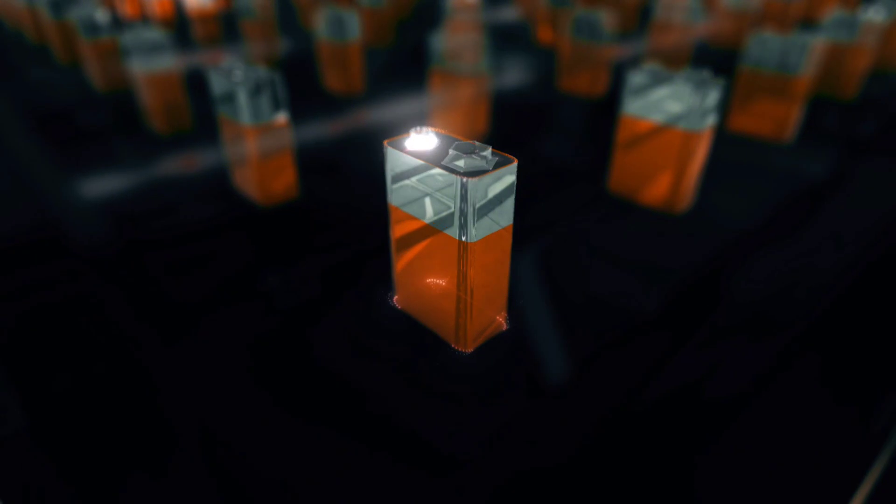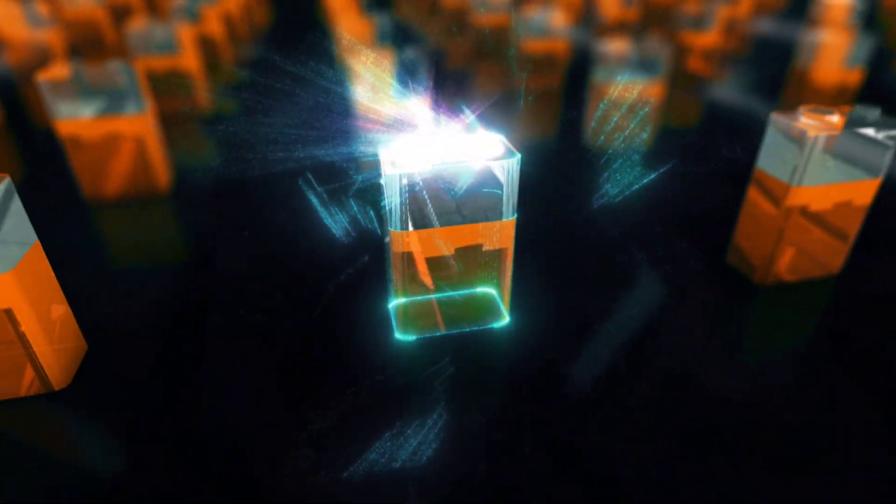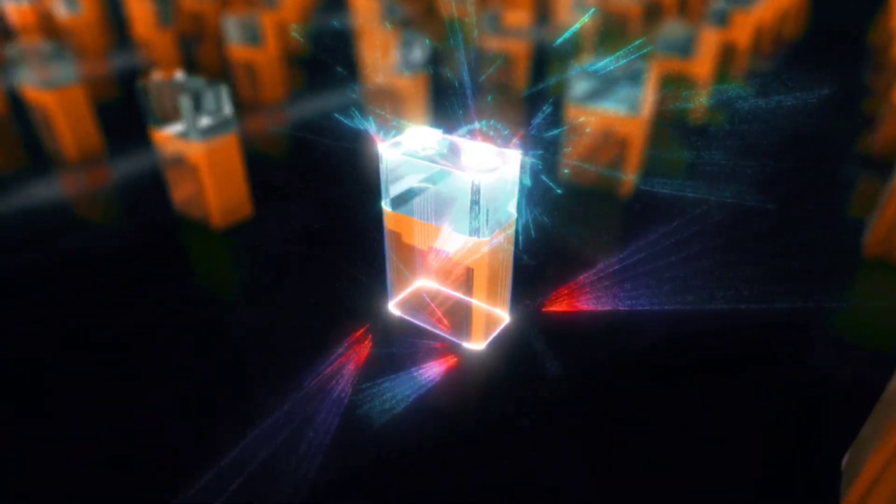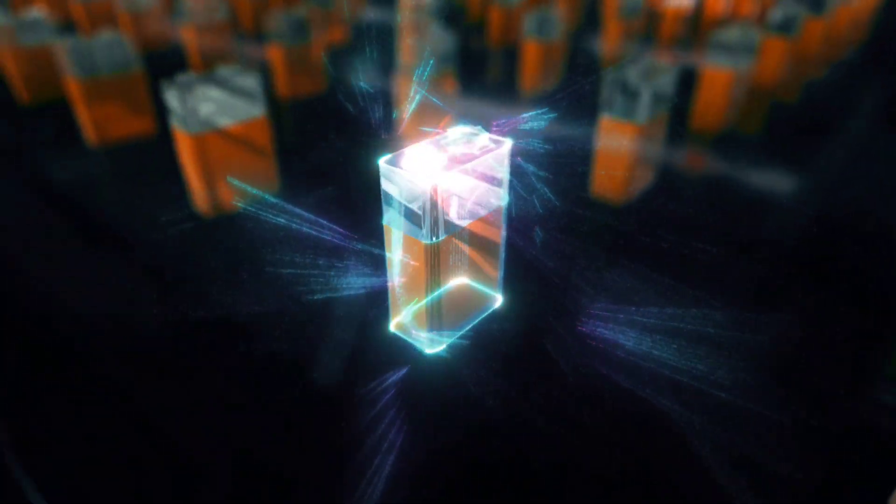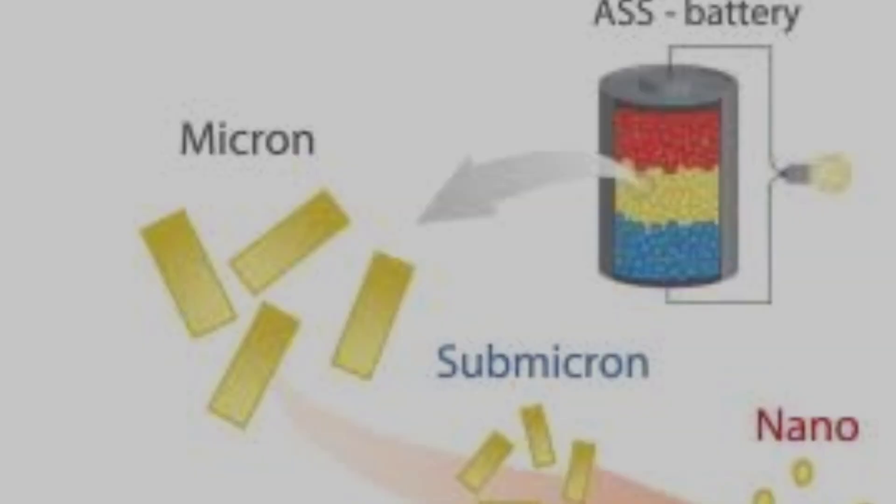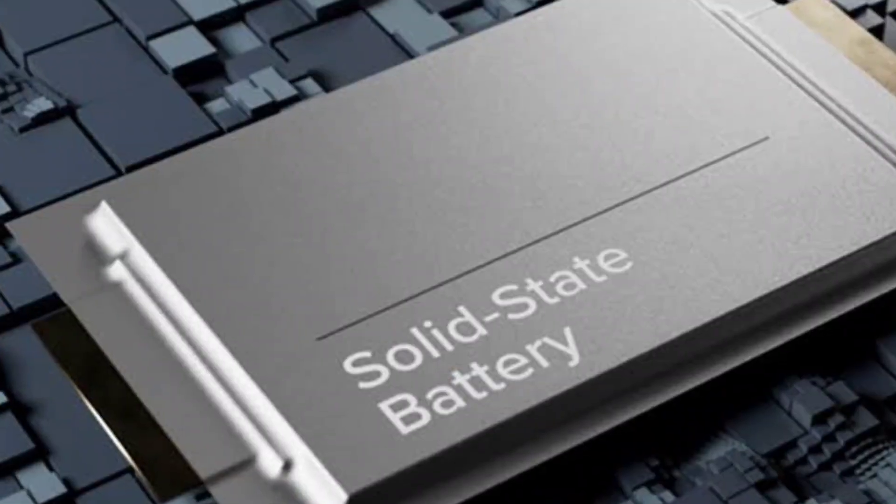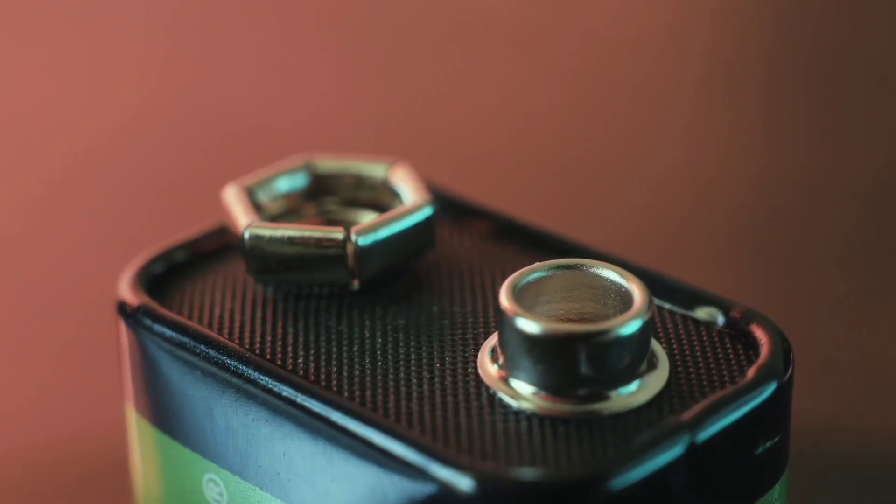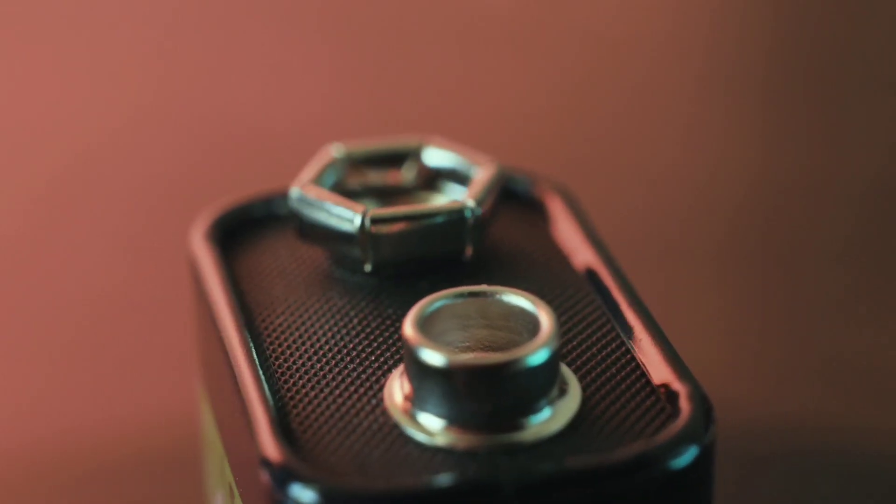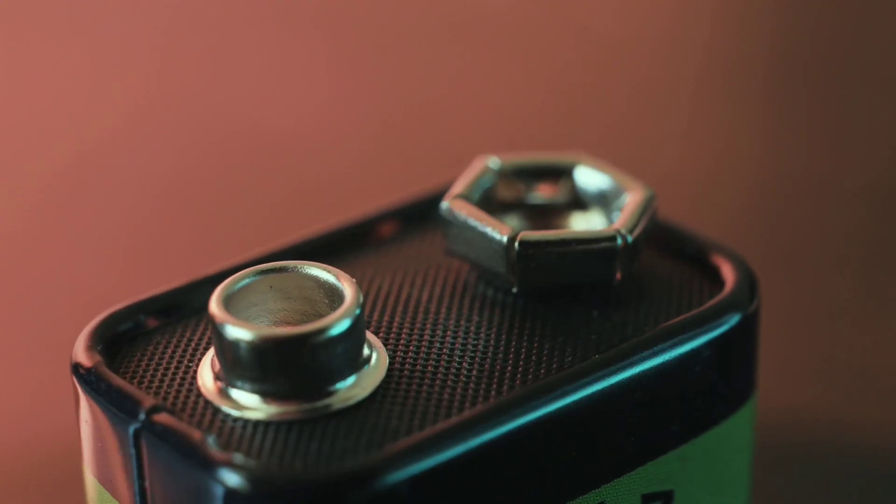So how did they get here? CATL has invested heavily in research and development, with over 1,000 team members focused on solid-state technology. They're working on a specific approach called the sulfide route, which uses sulfide-based electrolytes, a promising solution in the solid-state battery world. Just recently, they reached a milestone by producing trial units of 20 ampere-hour batteries, a big step in the journey toward mass production.